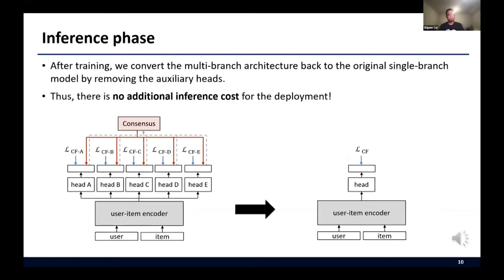After training, we convert the multi-branch architecture back to the original single branch model by removing the auxiliary heads. Thus, there is no additional inference cost for the deployment. Here, we can use any preferred head based on the system requirements for further processing. Further, the consensus for multiple heads can be also used as a high-capacity model in the scenario where there is less constraint on the inference cost.